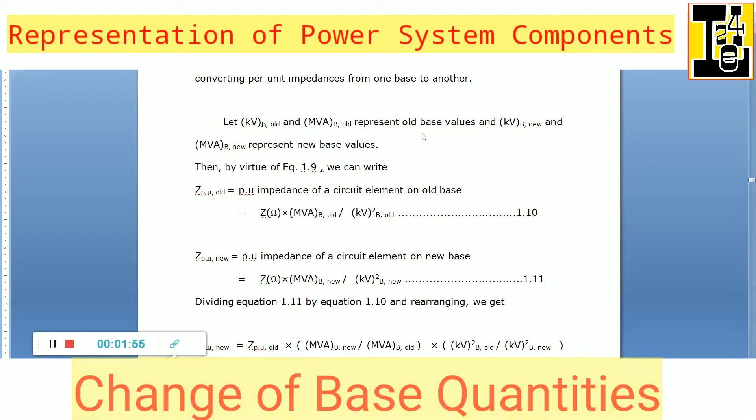So, by means of the expression what we have derived in the previous section, we can write Z per unit old is equals to per unit impedance of the circuit element on old base.